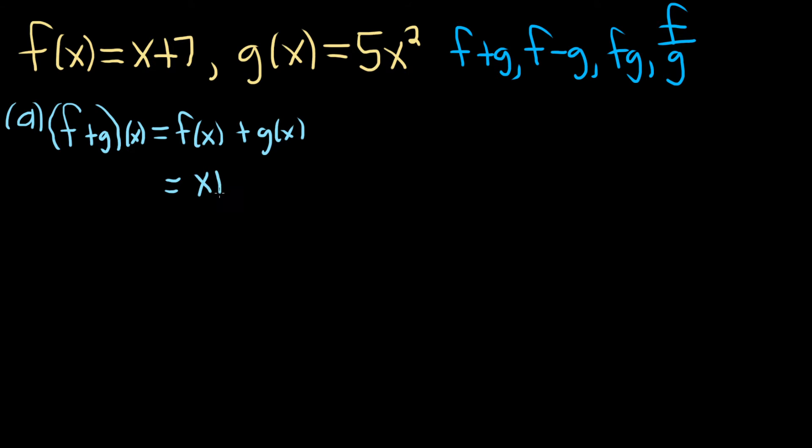You can just replace f with f, so x plus 7, and then g with g, so 5x squared. That's it. That's all you have to do. For f plus g, all you do is you add them. So the function is called f plus g, and this formula here, f plus g of x, tells you how to actually compute it. Basically, it's just saying you add them up.